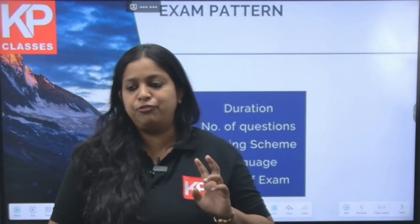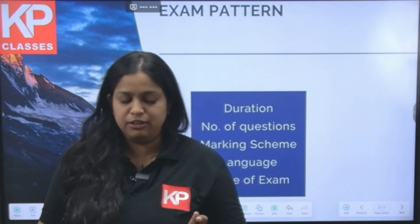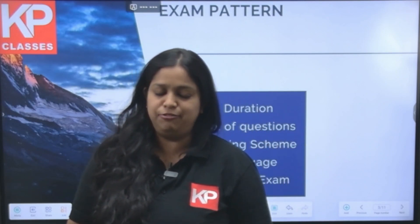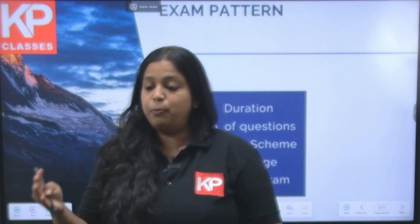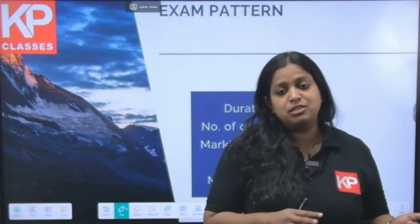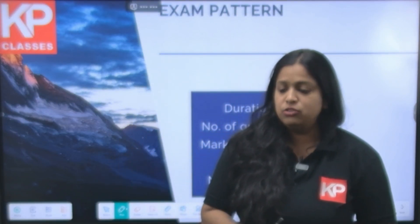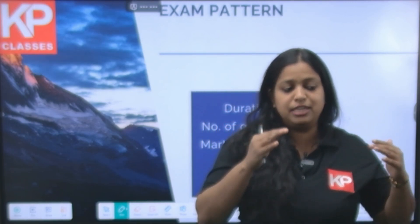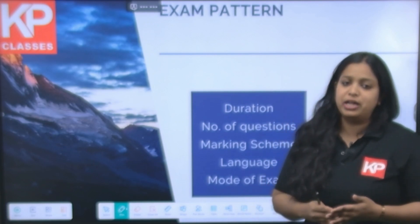Part A carries 2 marks for a correct answer and 0.5 marks for negative marking. Part B is also the same — 2 marks for correct and 0.5 as the negative marking for each incorrect answer. For Part C, the marks for a correct answer is 4 and the negative mark is 1.33. This covers the exam duration, different parts, and marking scheme.